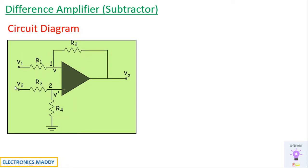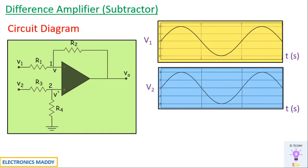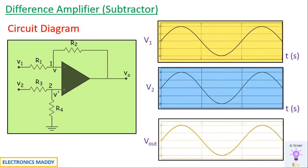That is V2 minus V1. Similarly, if you're choosing V1 to be 4 volts and V2 to be 2 volts, you will still be getting 2 volts at the output, but it will be an inverted one.